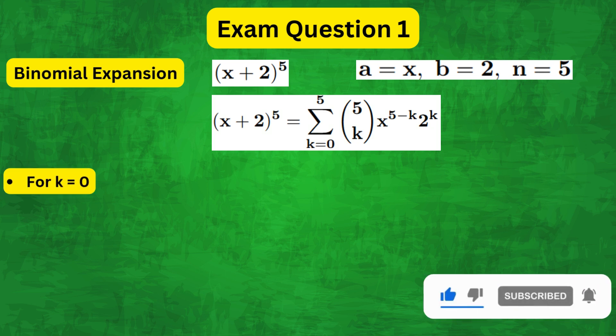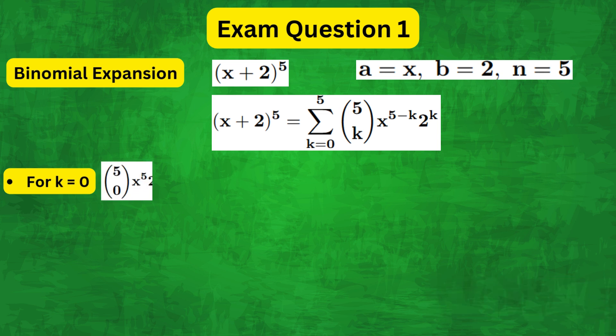So for k equals 0 we get 5 combination 0, x to the 5 minus 0 times 2 to the 0. Now 5 combination 0 is just 5 factorial over 5 factorial times 0 factorial which equals 1 times x to the power of 5 times 2 to the power of 0 which is 1. Therefore this term comes out to be x to the power of 5.